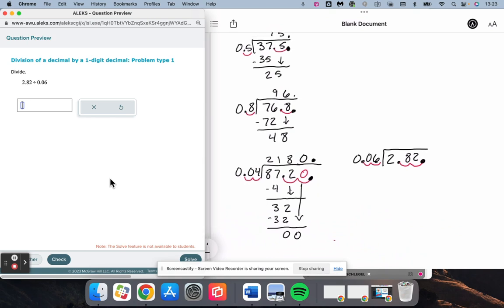6 does not go into 2. 6 does go into 28 four times, giving us 24. 28 minus 24 is 4. Bring down the 2. 6 goes into 42 seven times, giving us 47.7. And that's it for this video.